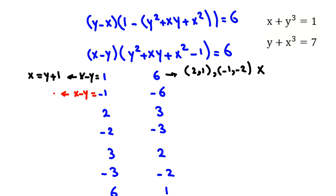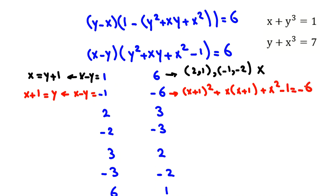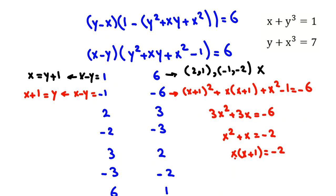Taking negative y to the right side gives x equals y minus 1, or equivalently y equals x plus 2... replacing in the expression gives 3x squared plus 3x equals negative 6. Dividing by 3: x(x + 1) equals negative 2. The product of two consecutive integers cannot equal negative 2, so this case is impossible.